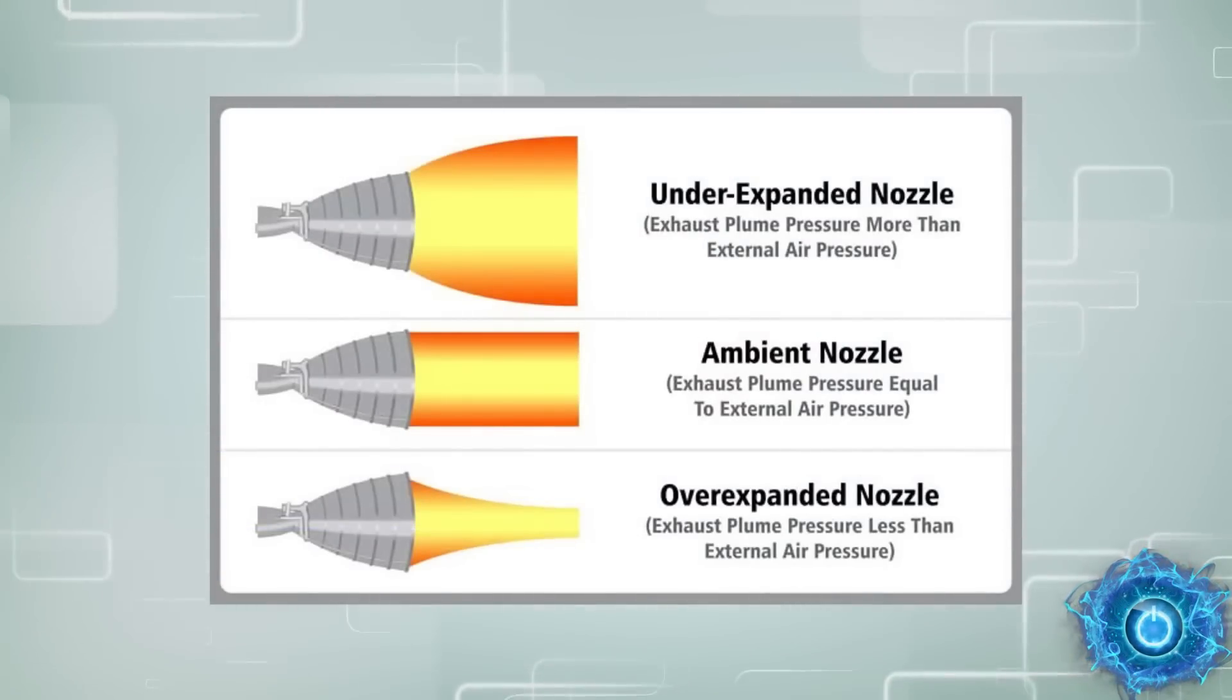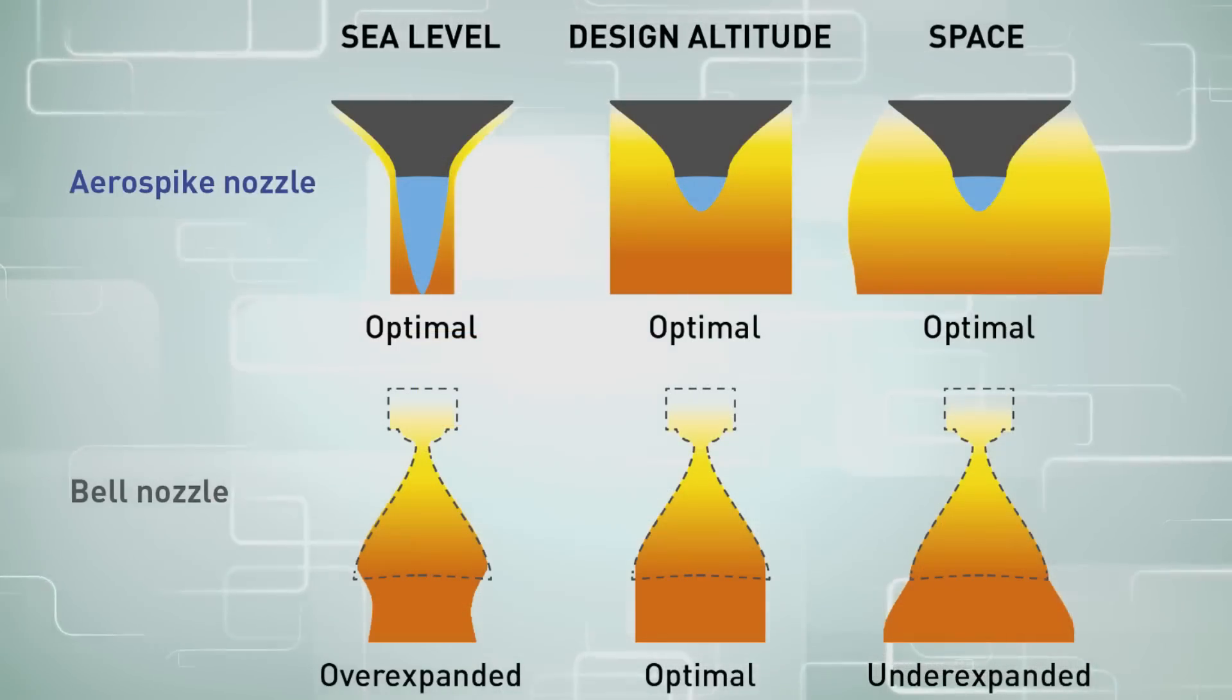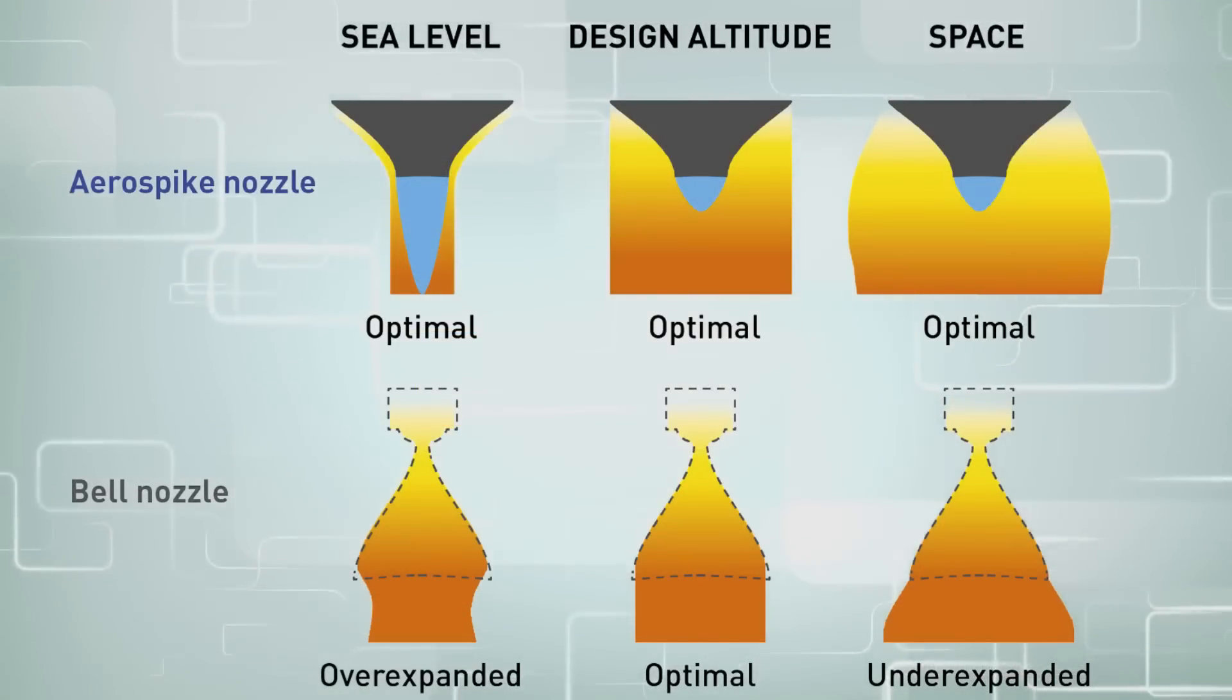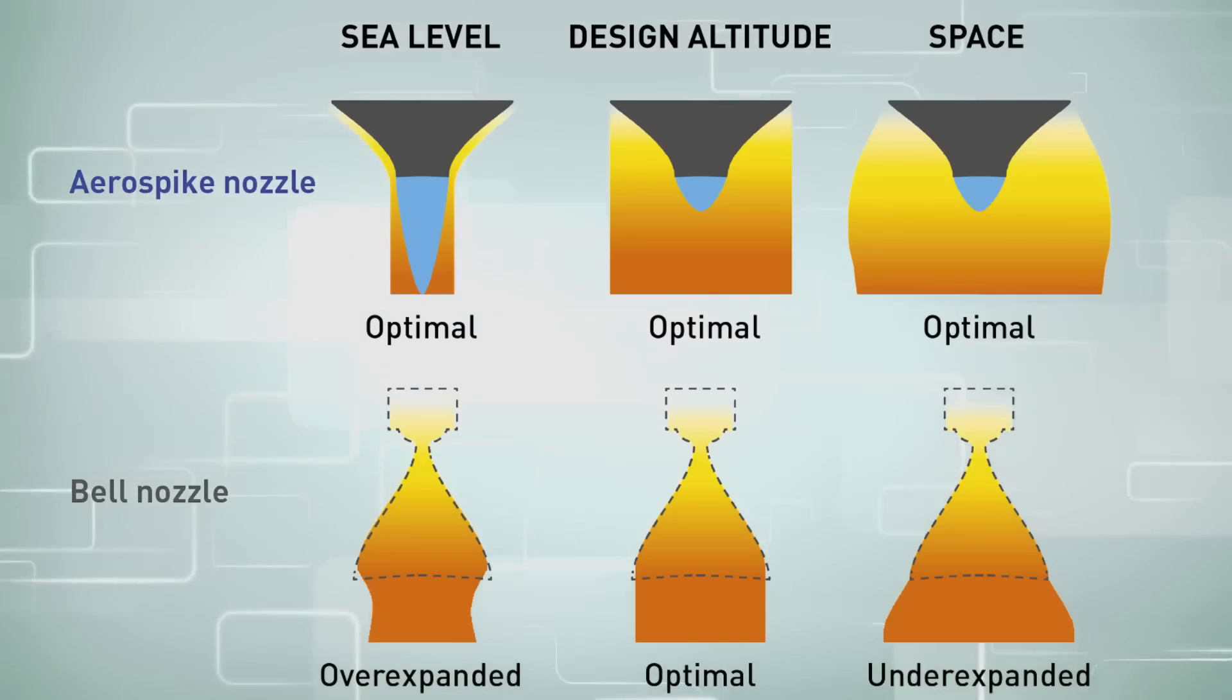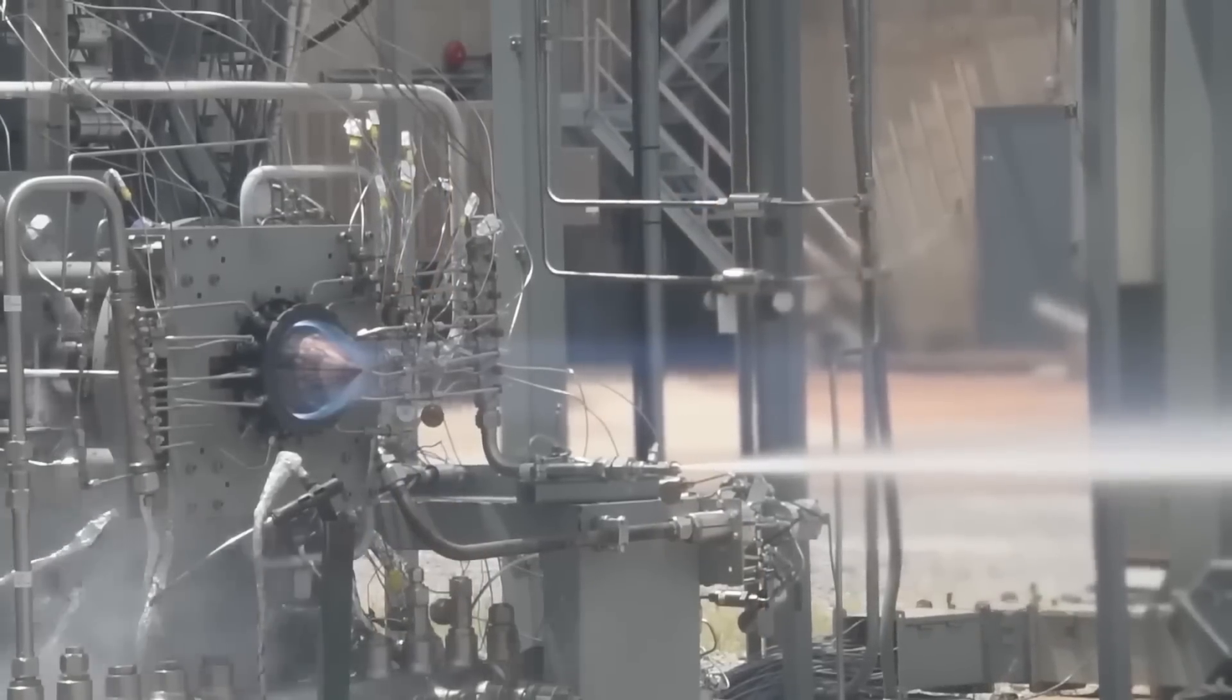However, an aerospike is a little bit different because it can solve these problems with varying back pressure by simply using the local atmospheric pressure to control the flow area. This means that it could be 30% more efficient but also be usable as a single-stage rocket engine.